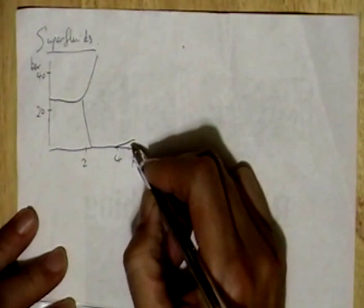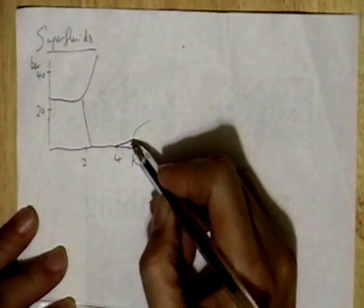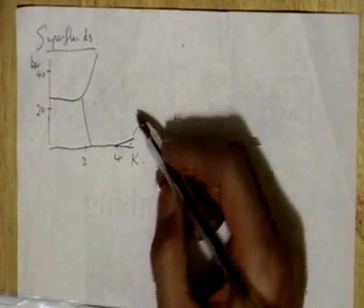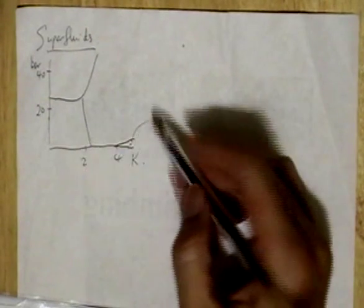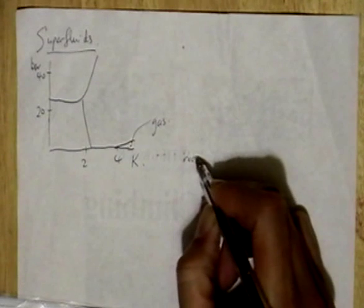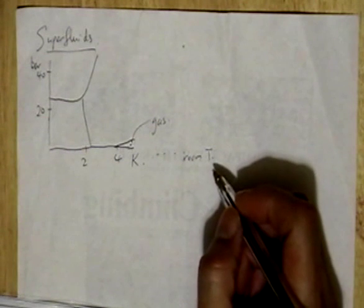This region, possibly the more familiar region, above 4K and at low pressure, that's the gas phase of helium. So if you go all the way up to room temperature, that would be the helium gas at room temperature.